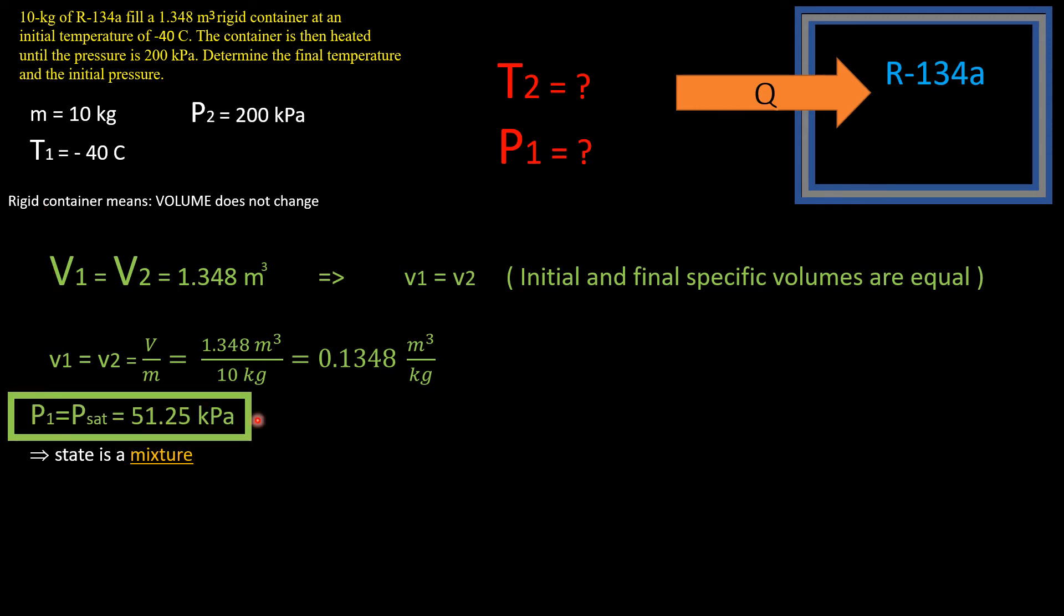We also determined that we are dealing with a mixture, so let's take a look at our PV chart. Here's the pressure versus specific volume with the famous saturation line. Our state one is right here in this area since it is a mixture.